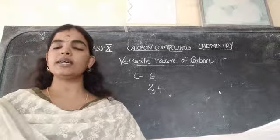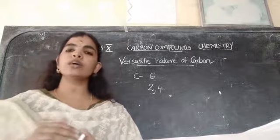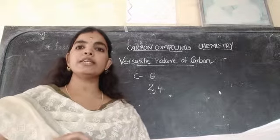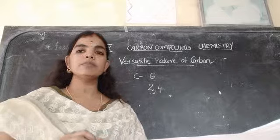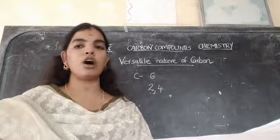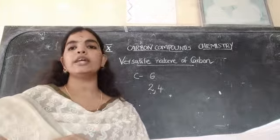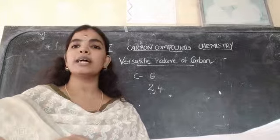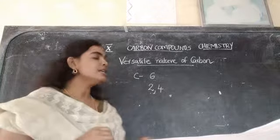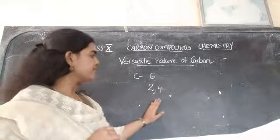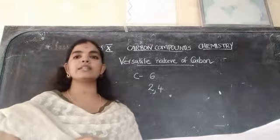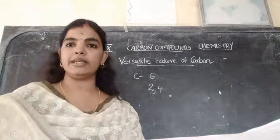We know that in order to complete the octet, atoms will either transfer their electrons or share their electrons in order to satisfy the octet rule. So in the case of carbon, since there are 4 valence electrons, there are 2 possibilities.